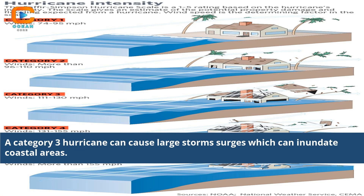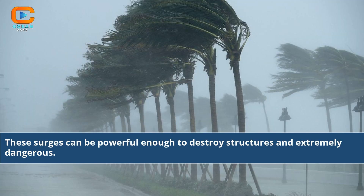A Category 3 hurricane can cause large storm surges which can inundate coastal areas. These surges can be powerful enough to destroy structures and are extremely dangerous.